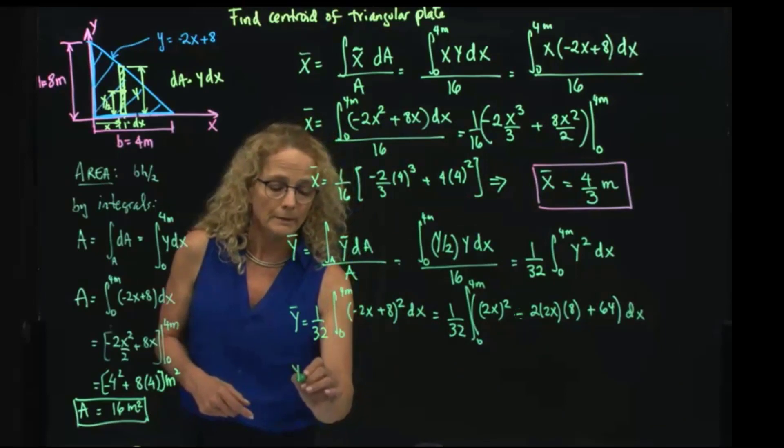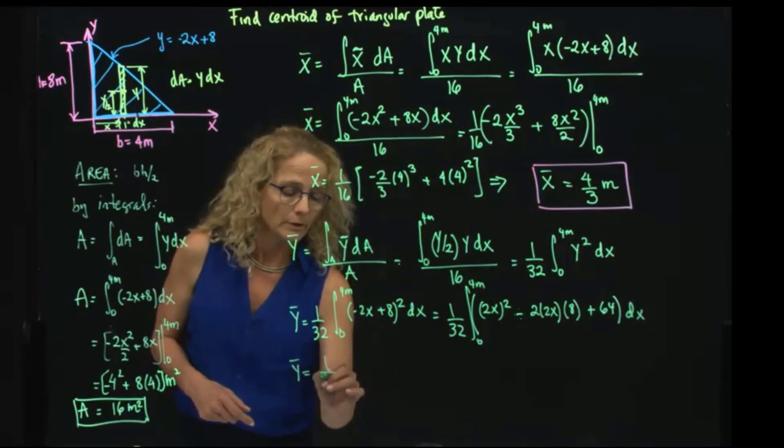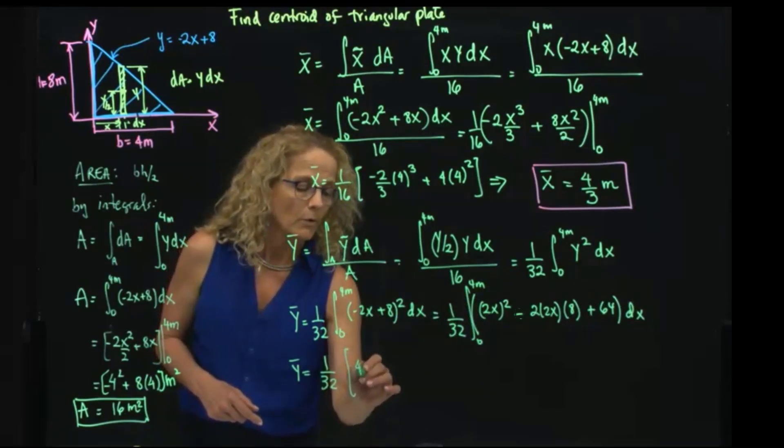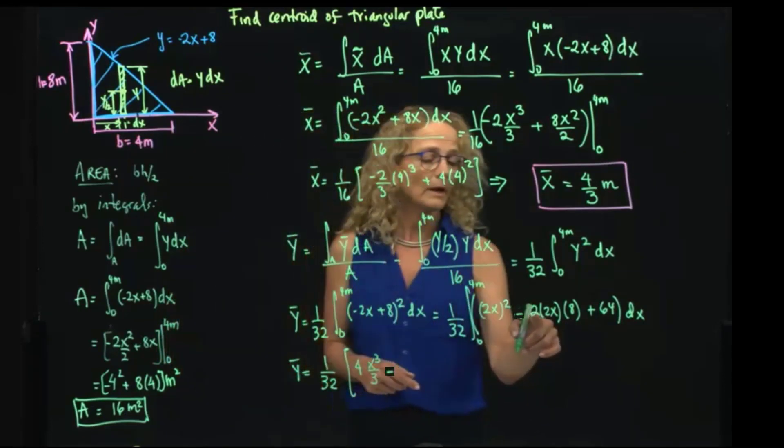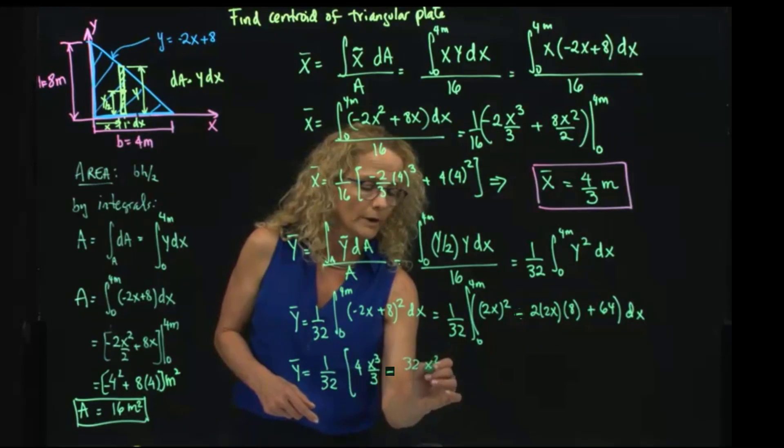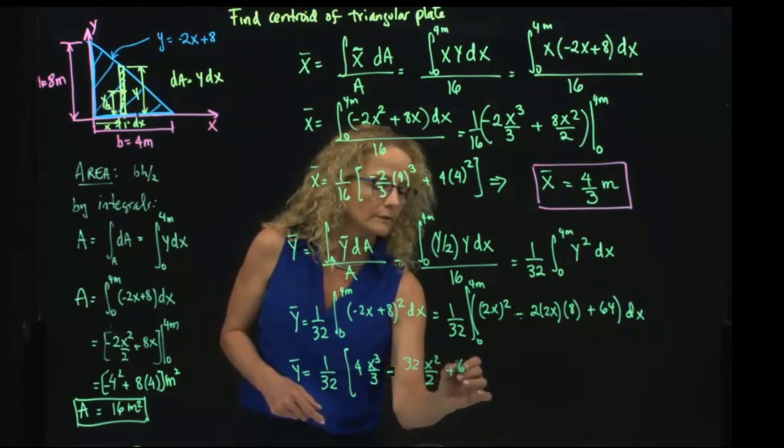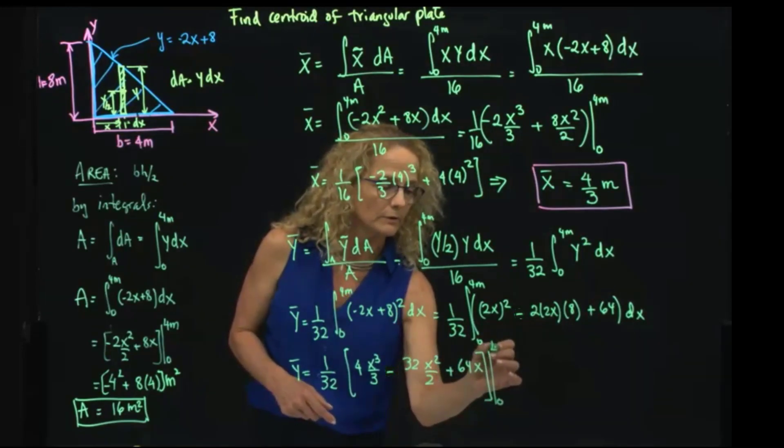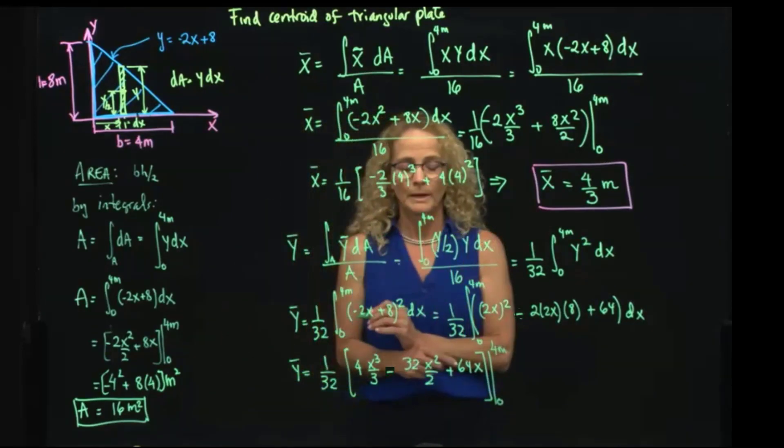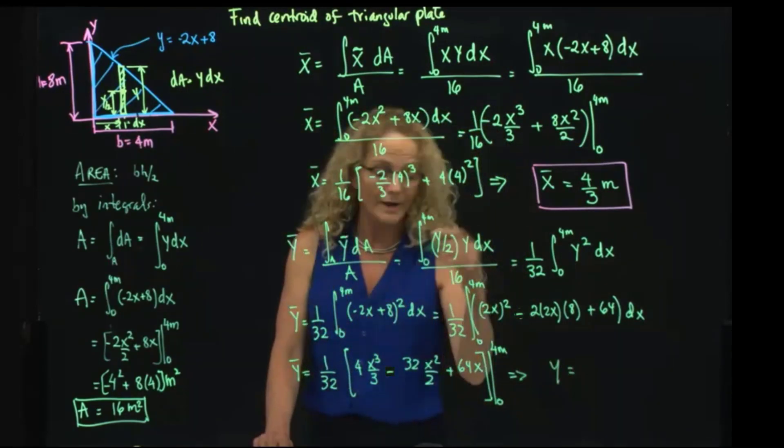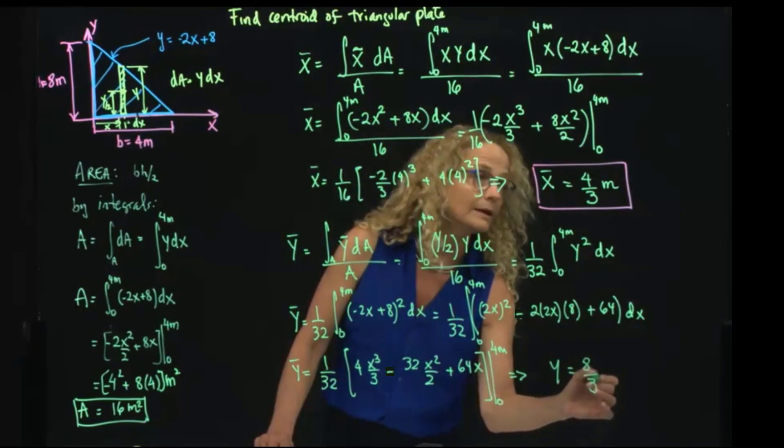That will give me 1 over 32, and here I have 4X cubed over 3 minus 32X squared over 2 plus 64X, all that evaluated between 0 and 4 meters. You can evaluate all that. Y will be equal to 8 over 3 meters.